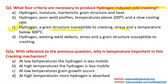With reference to the previous question, why is temperature important in this cracking mechanism? When the weld metal is hot, the hydrogen molecules can pass through and come up to the surface. But when the weld cools rapidly, the hydrogen atoms get trapped inside the weld metal or HAZ region, leading to HICC. At low temperature, hydrogen is less mobile and becomes trapped. Hence option A — at low temperature the hydrogen is less mobile — is the correct answer.